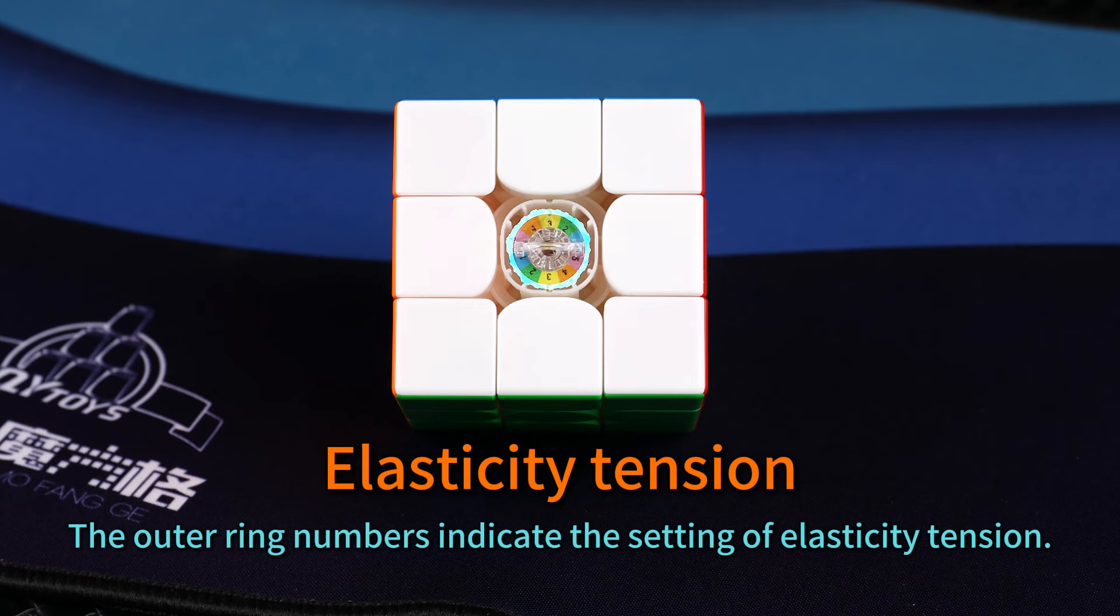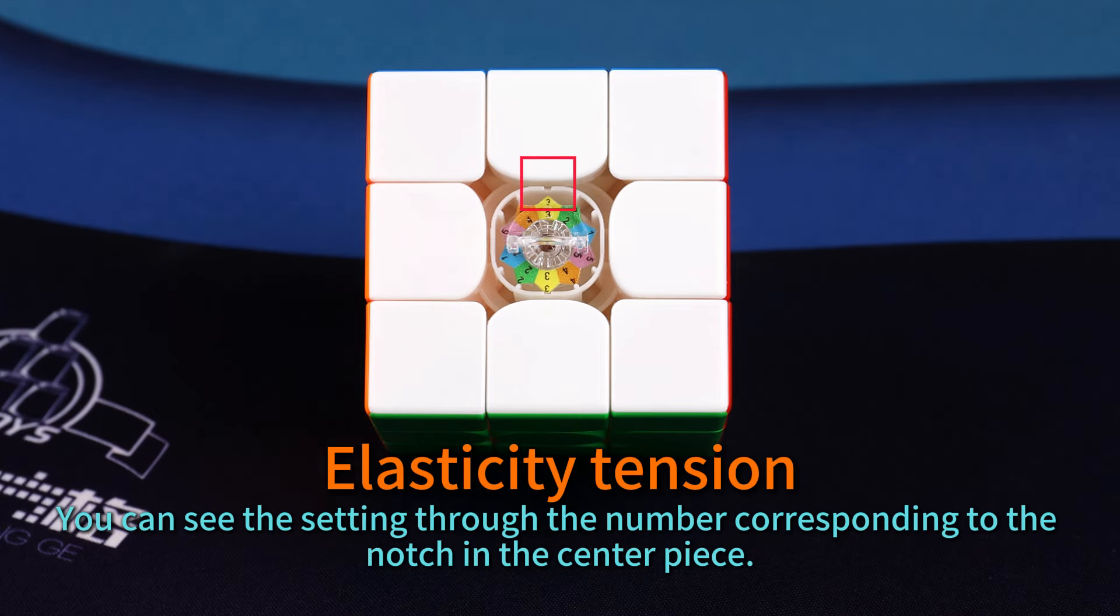Elasticity tension. The outer ring numbers indicate the setting of elasticity tension. You can see the setting through the number corresponding to the notch in the center piece.